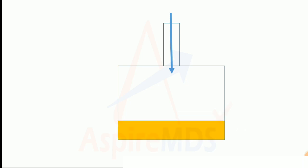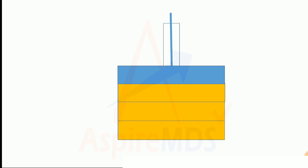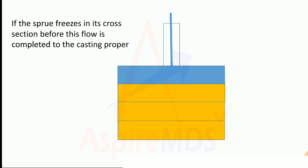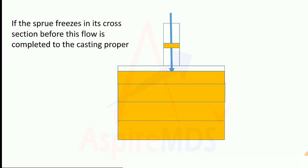When liquid metal is placed within the pattern, it solidifies in stages — more metal enters from the sprue and solidifies further until a fully formed casting is obtained. However, if freezing takes place in the sprue itself, no additional metal can pass through to compensate for the shrinkage. This leads to void formation, resulting in localized shrinkage porosity.